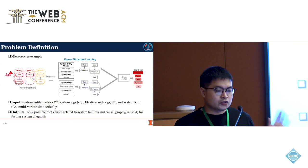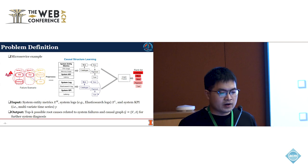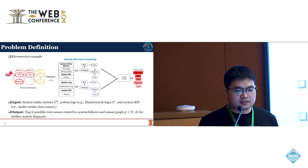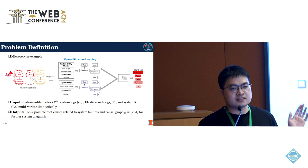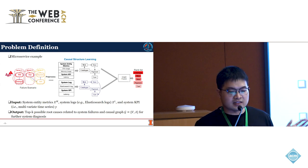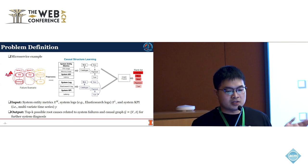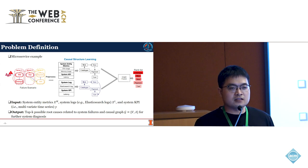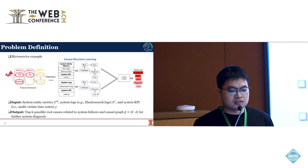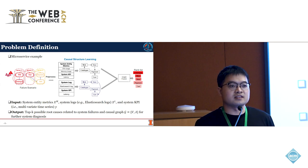Before we introduce our method, let's look at the formal problem definition. Suppose we are given the system entity metrics, the system log, and the system KPI. Here, KPI is the abbreviation of key performance indicator, such as latency, which monitors the performance of the microservice system. Our goal is to detect the top-K multiple possible root causes that are most related to the system failure, as well as the causal graph for further system diagnosis.